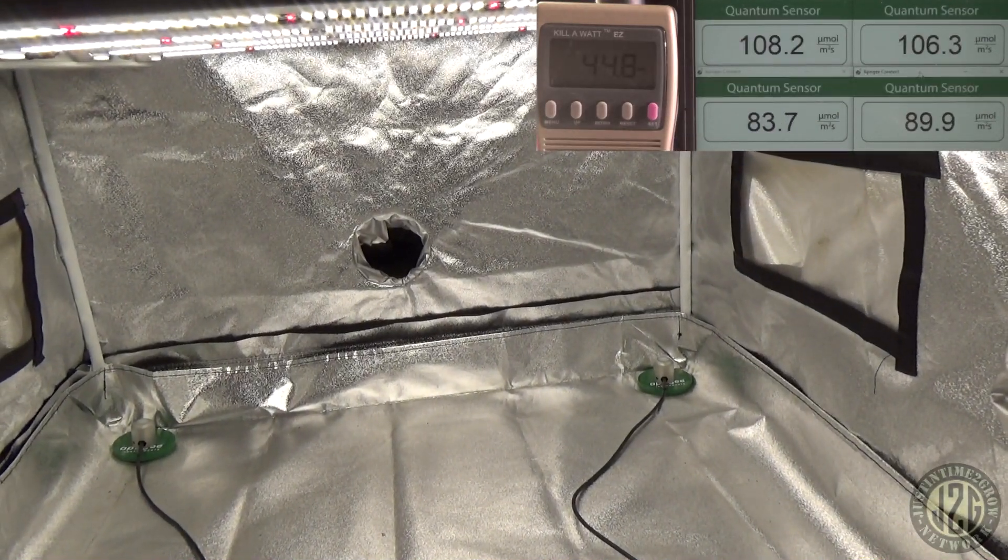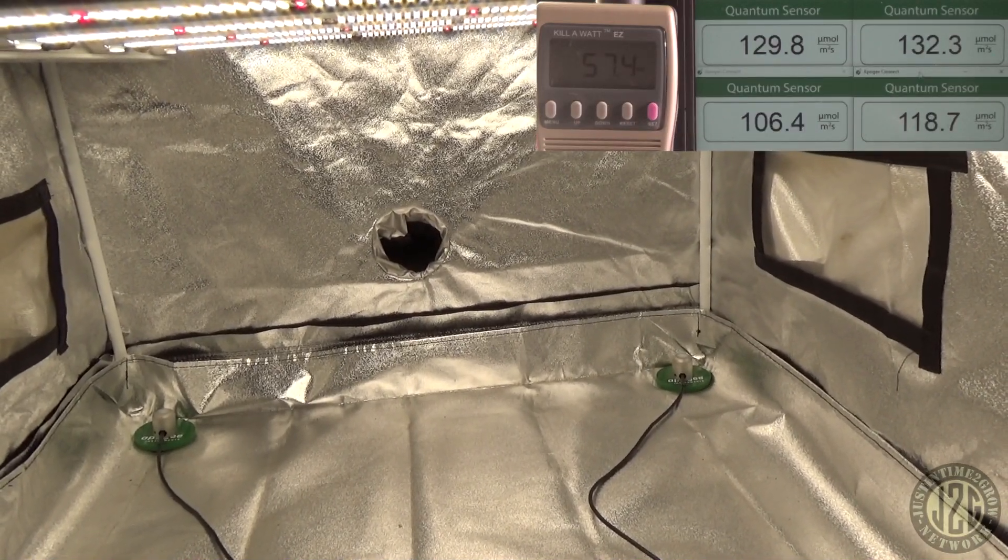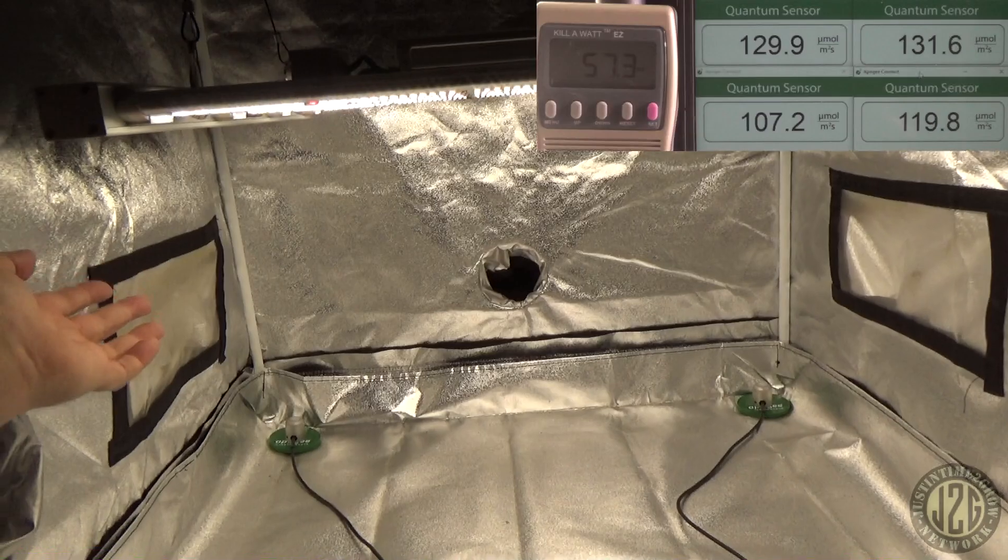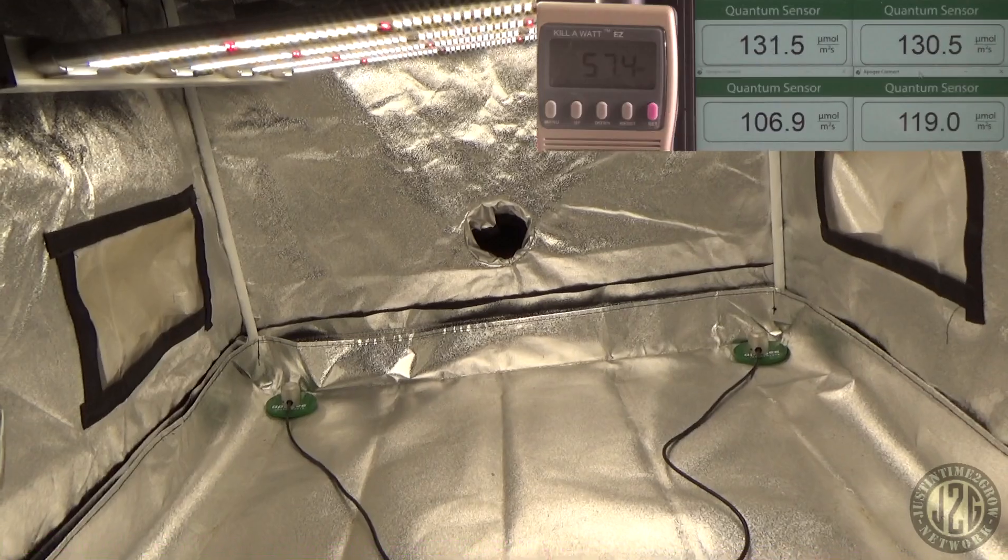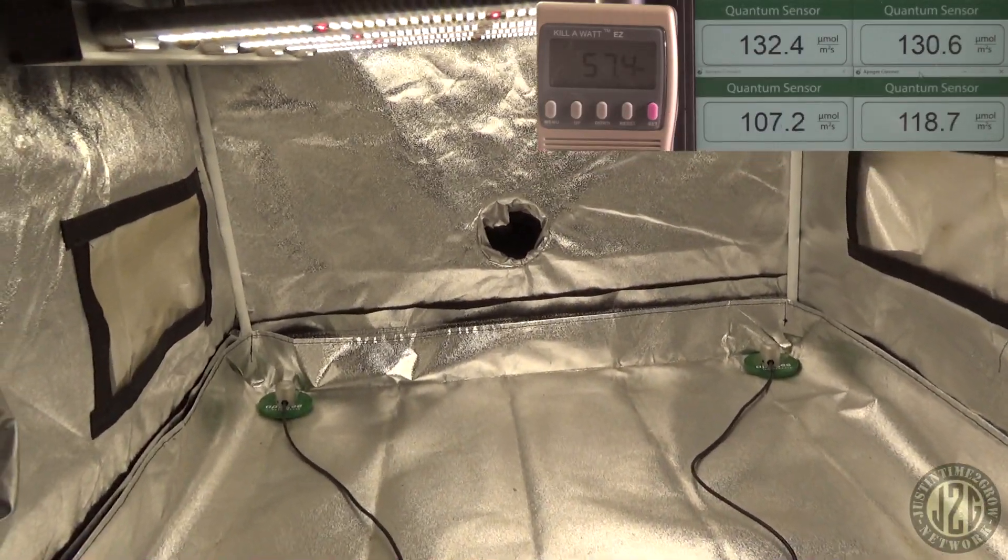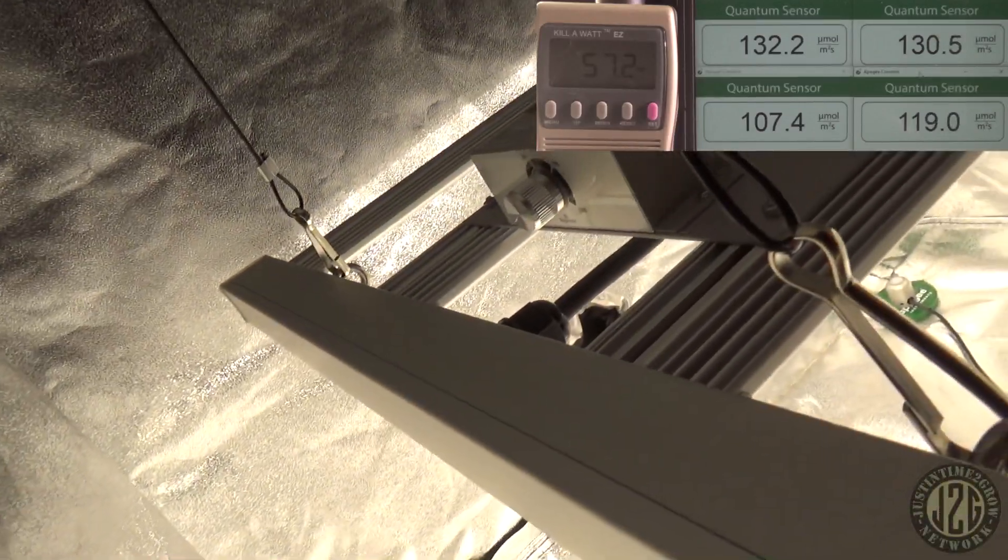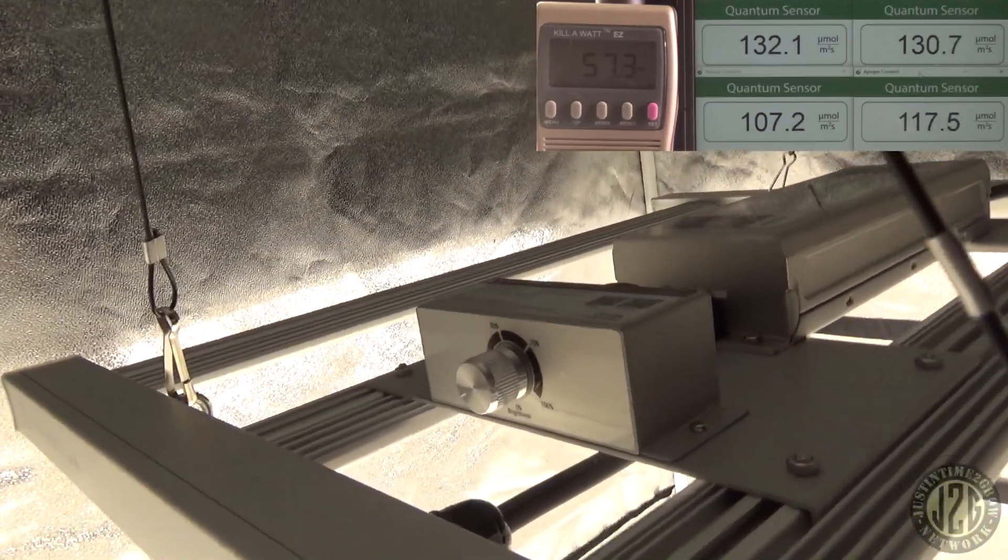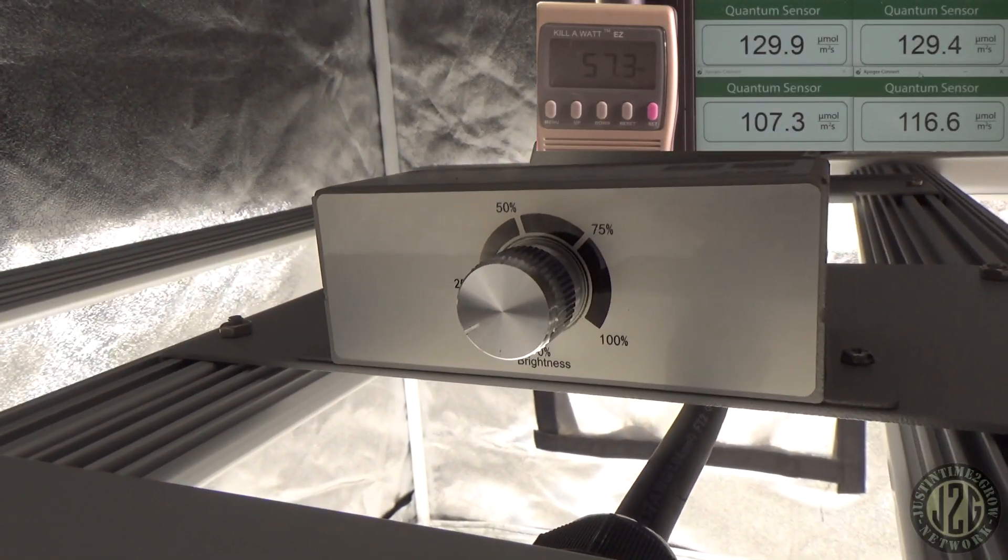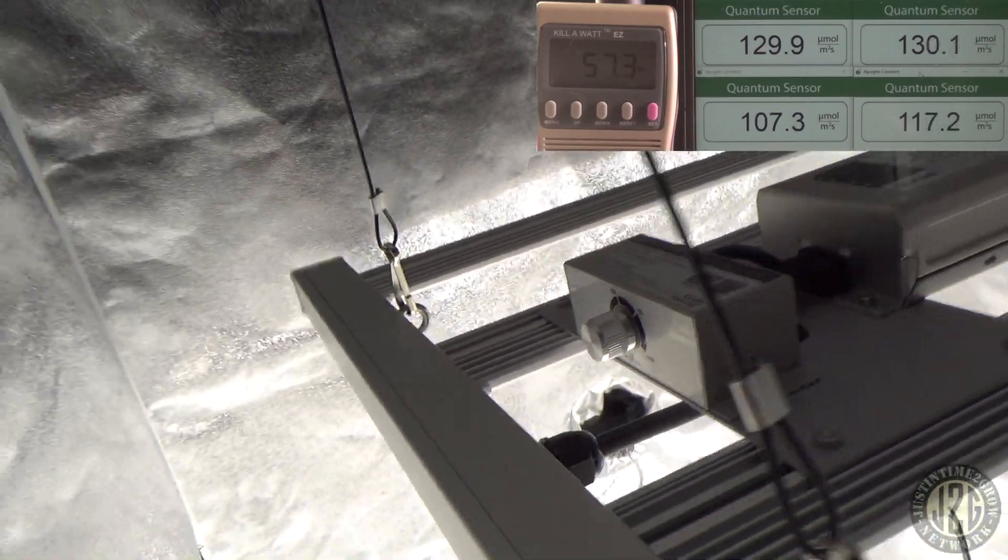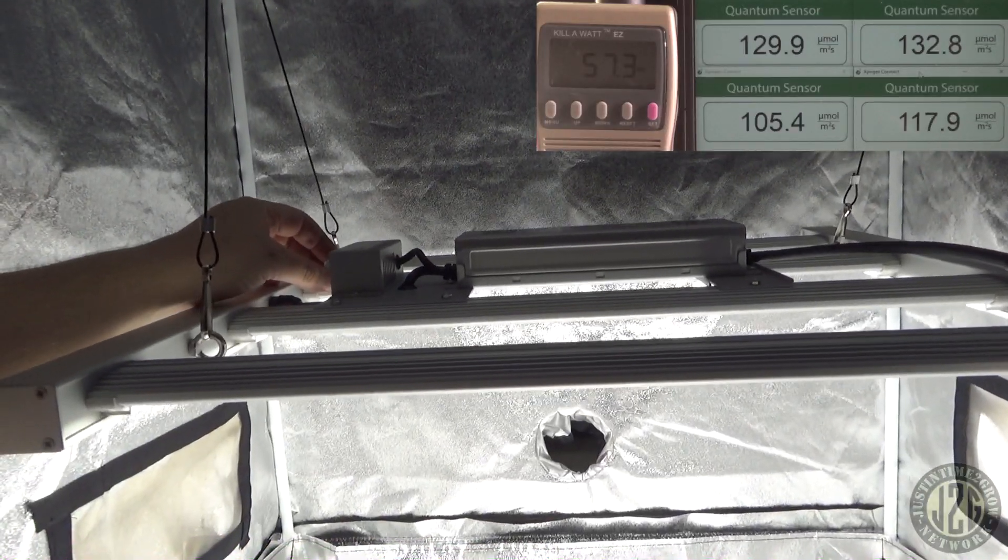We can crank that up a little bit. Let's get to the clones. There we go, and that's going to be where we're at for clones and seedlings, about 57 watts. It's hard to get this around to the side to see where the knob is at, but I'll try and get you over there.